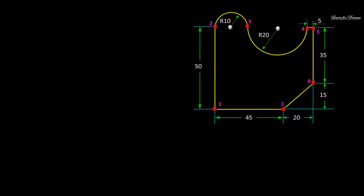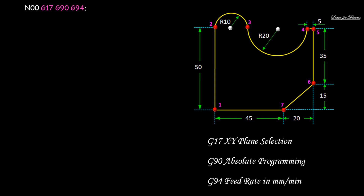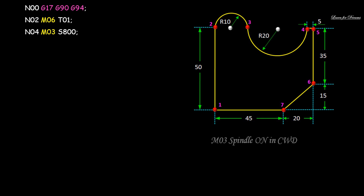Now let's see the actual programming — keep this diagram for reference. N00: G17, G90, G94 — G17 is XY plane selection, G90 is absolute programming, G94 is feed rate in mm per minute. Then N02: M06 T01 — M06 is tool change, T01 is tool number one. Then N04: M03 S800 — M03 is spindle on in clockwise direction and S800 is spindle speed in RPM.